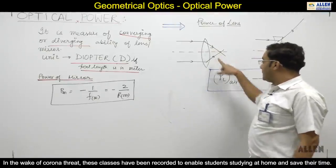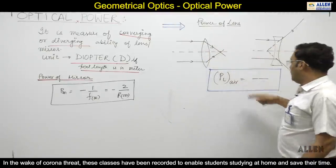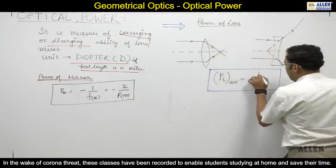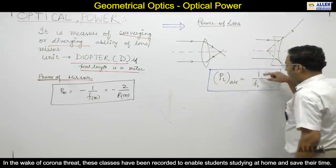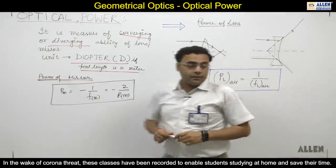PL - lens power in air - because medium changes, this formula is 1 by FL, where FL is the lens focal length in air. Clear? Clear.